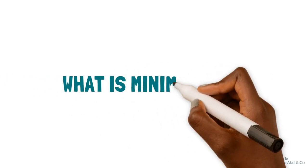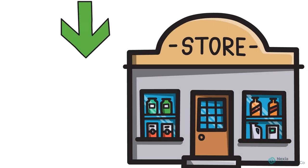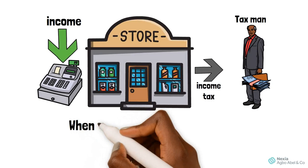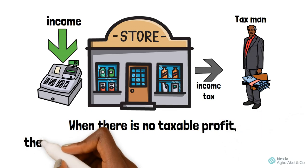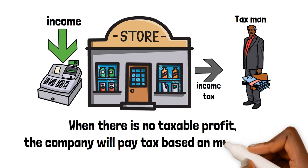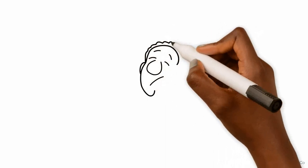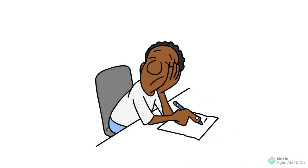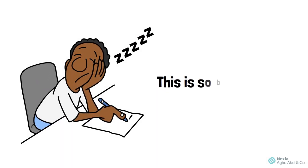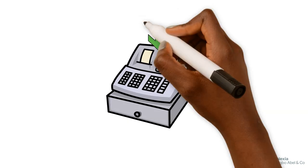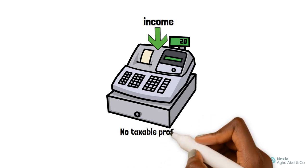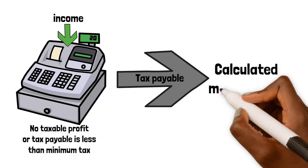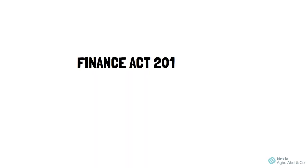What is minimum tax? Income tax is payable on taxable income or profits generated by companies from their activities. There are situations where a company's tax computation results in no tax liability, meaning the company did not make taxable profits. In such a situation, the company will be liable to tax based on minimum tax. Section 33(1) of the Companies Income Tax Act, Cap C21 LFN 2004 states that if a company doesn't make a taxable profit, or if the tax payable is less than the minimum tax as calculated based on the company's gross turnover and relevant laws, then the company will pay the calculated minimum tax.